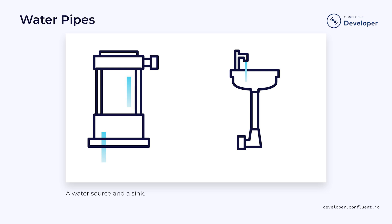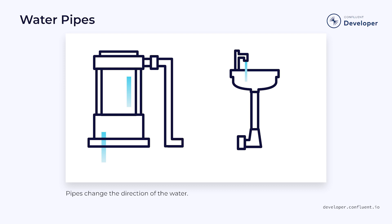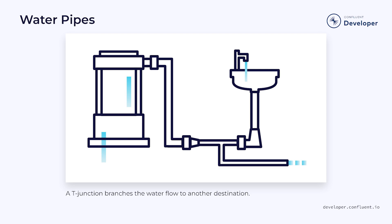The final thing we need in our plumbing system is something to carry the water from the source into our sink. This is done using pipes. The pipes can do a lot with the water flowing through them. They can change direction in order to get the flow to the right place. They can widen or narrow to adjust the speed and pressure of the water. Or they can branch off to multiple pipes.